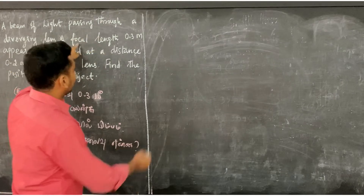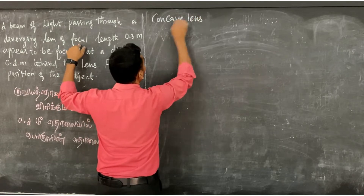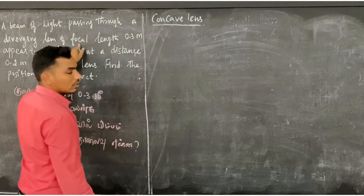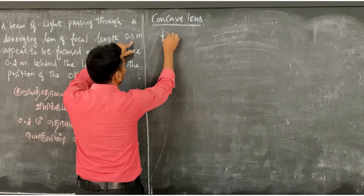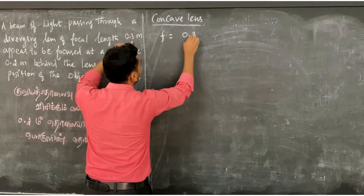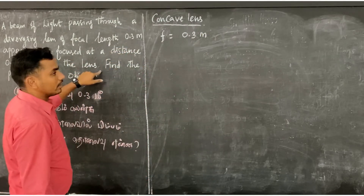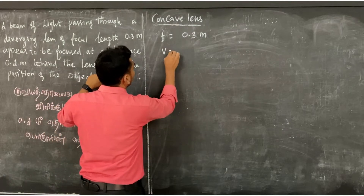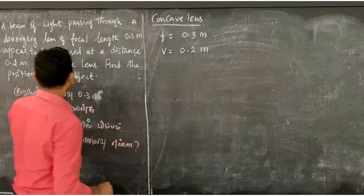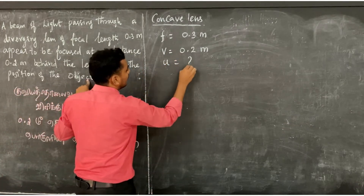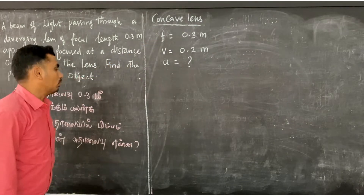So the diverging lens is the concave lens. Focal length F is equal to 0.3 meter. The image is formed at a distance of 0.2 meter behind the lens. Image distance V is equal to 0.2 meter. We need to find the position of the object U.